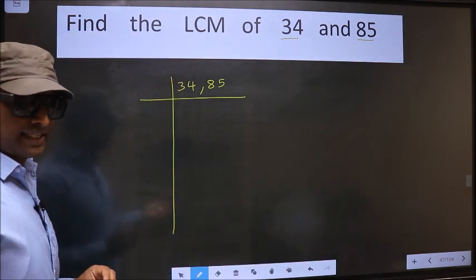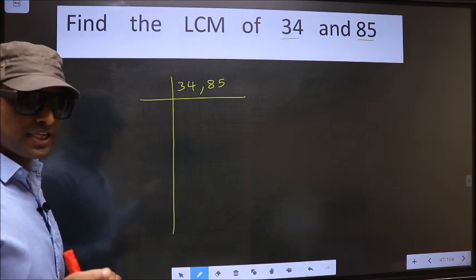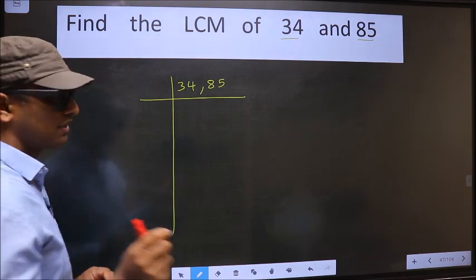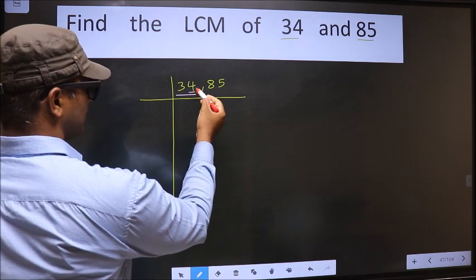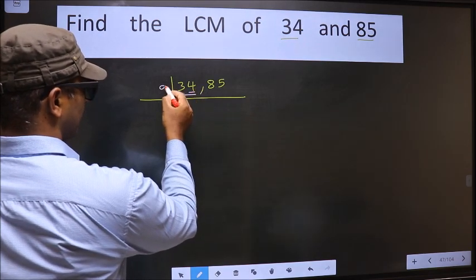Okay, next. Now we should focus on the first number, that is 34. Here last digit 4, even, so we take 2 here.